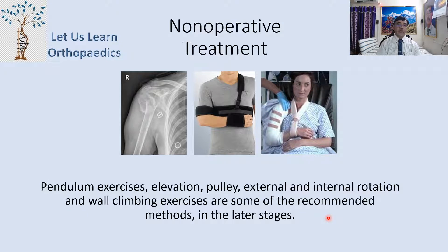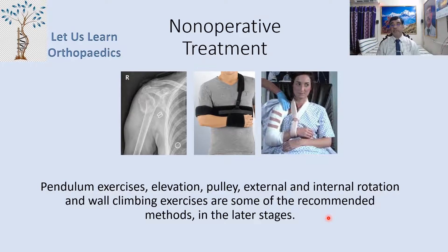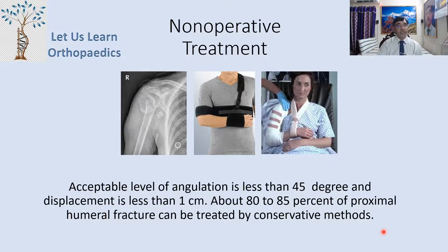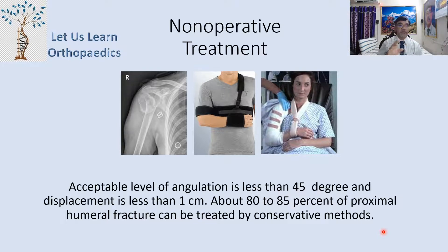Pendular exercises, elevation, pulley exercises, external and internal rotation, and wall climbing exercises are recommended in later stages. Acceptable angulation is less than 45 degrees and displacement less than 1 cm. About 80-85% of proximal humeral fractures can be treated by conservative methods only.